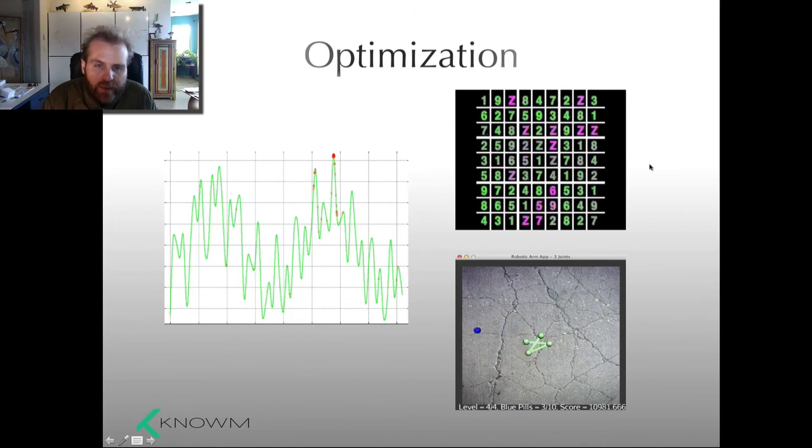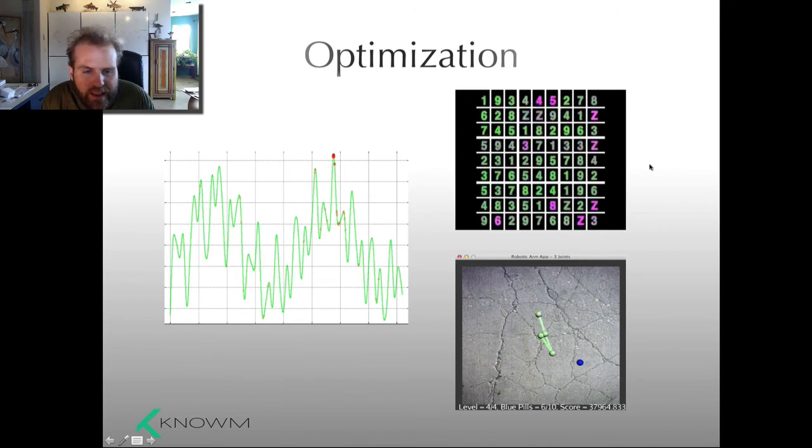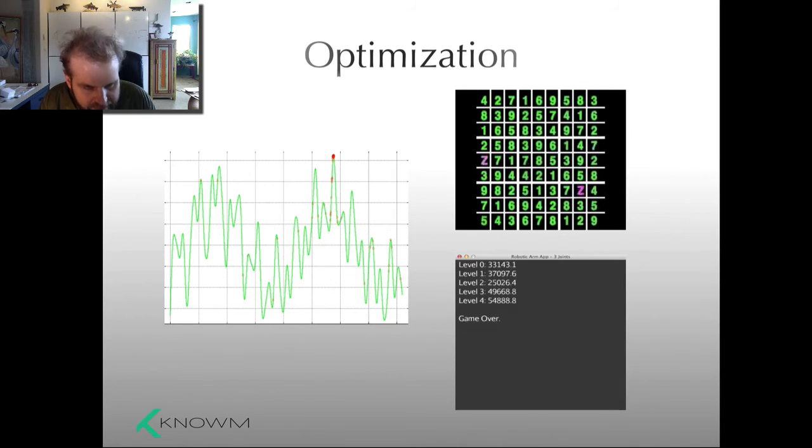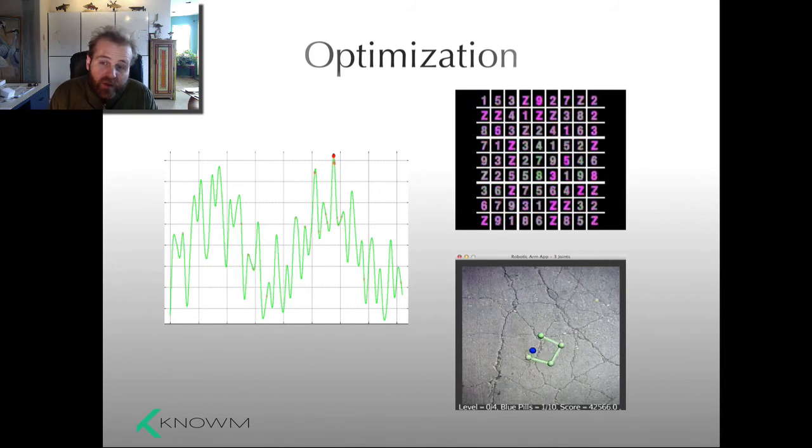We can hook these things up in various ways to solve problems. For example, Sudoku, this is an example of a planning problem, combinatorial optimization. You have all these constraints. You have your rows, columns, blocks, and they all have to satisfy certain constraints. And the puzzle is about figuring out those constraints. And so if you hook these things up in the right way, the system will spontaneously solve this problem.